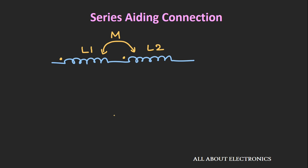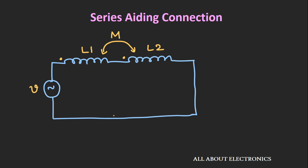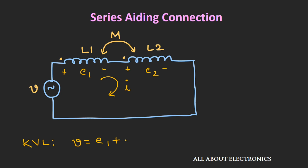Let's say we have two inductors L1 and L2 connected in series. Whenever we apply an AC voltage source to this inductor combination, current I will flow through it. Let's say voltages E1 and E2 are the voltages across the two inductors. Here, these two inductors are connected such that the flux generated in them is adding to each other — that is, they are in a series-adding connection. According to Kirchhoff's voltage law, V equals E1 plus E2.